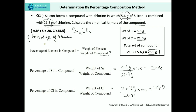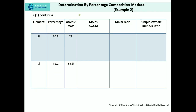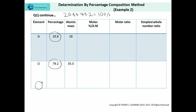Now we have the percentage of both elements and the atomic masses are already given, so we can find the empirical formula. Before proceeding, we need to do one check: adding up the percentages of the given elements should come out to 100%. If it's not 100%, then we need to consider oxygen as a third element. Here, 20.8 plus 79.2 gives 100%, so we need not add oxygen.